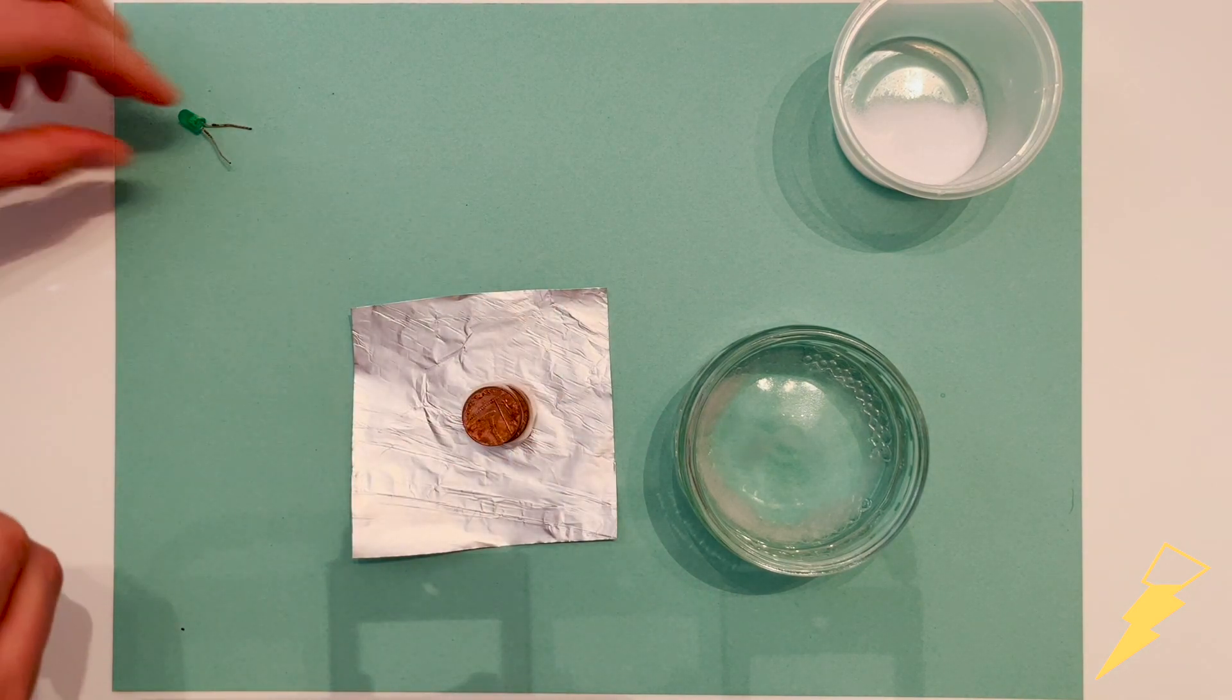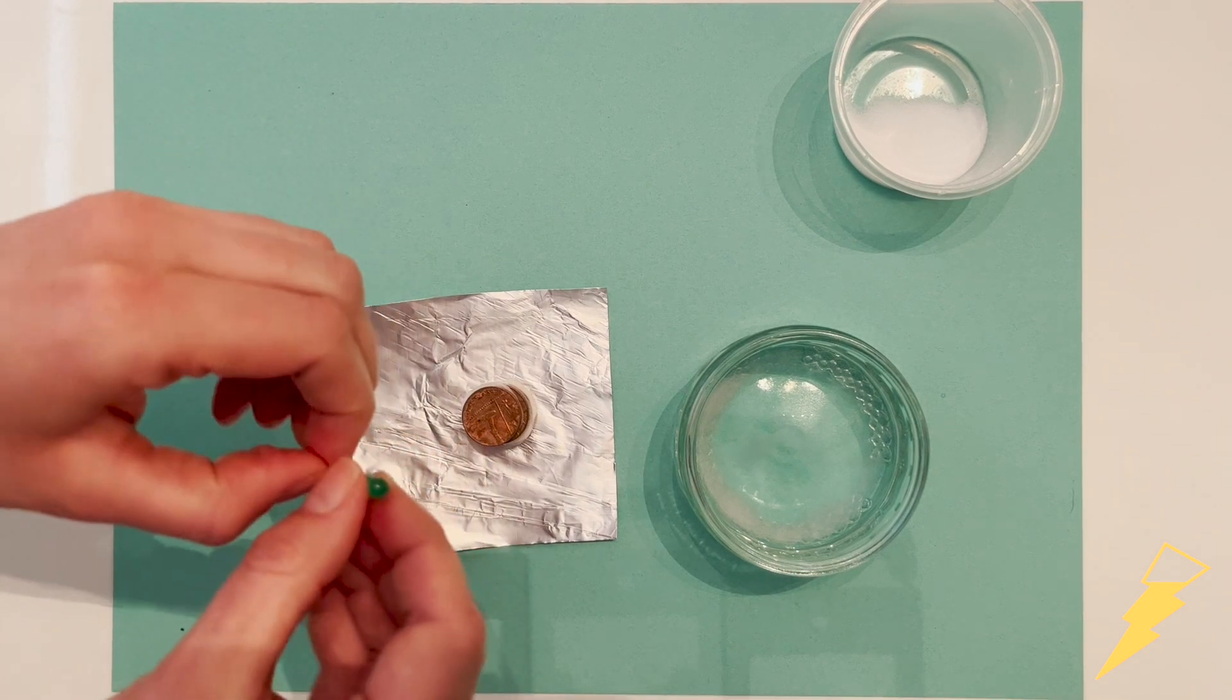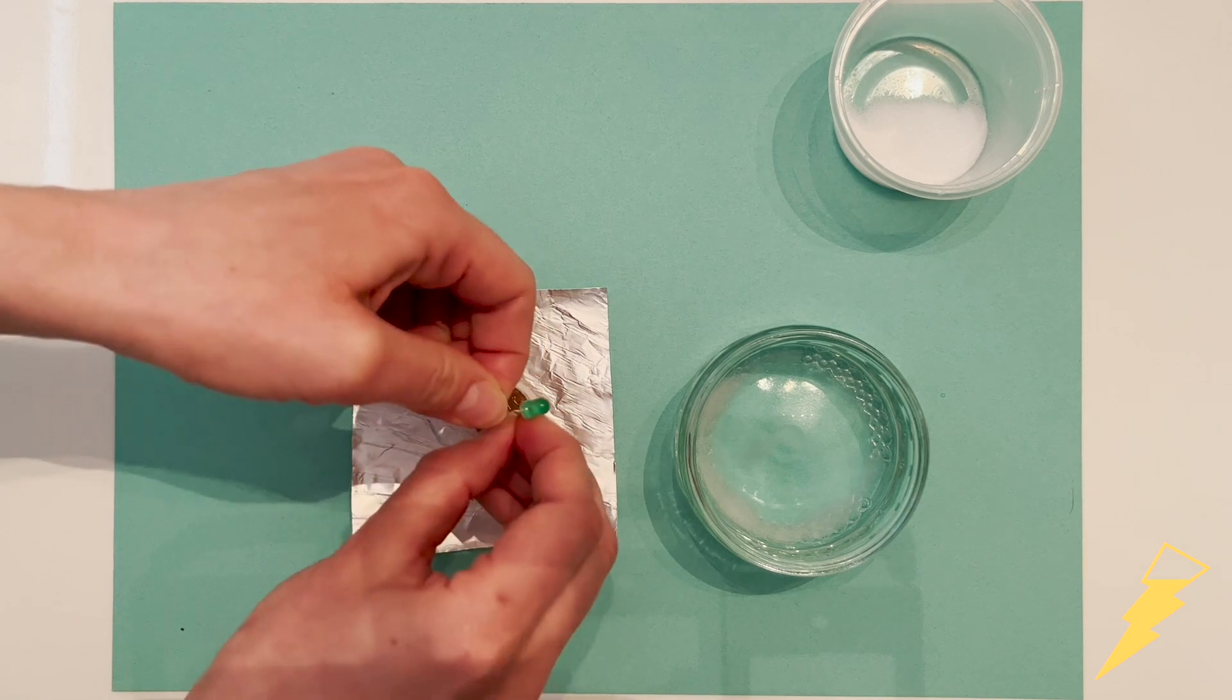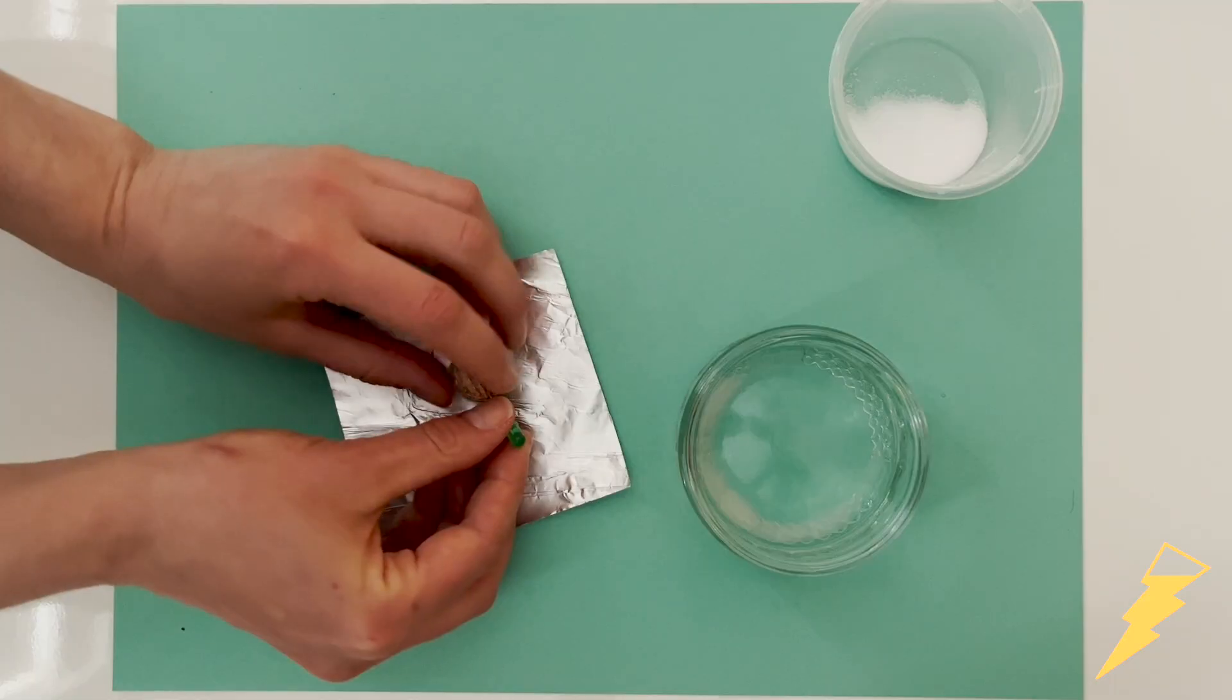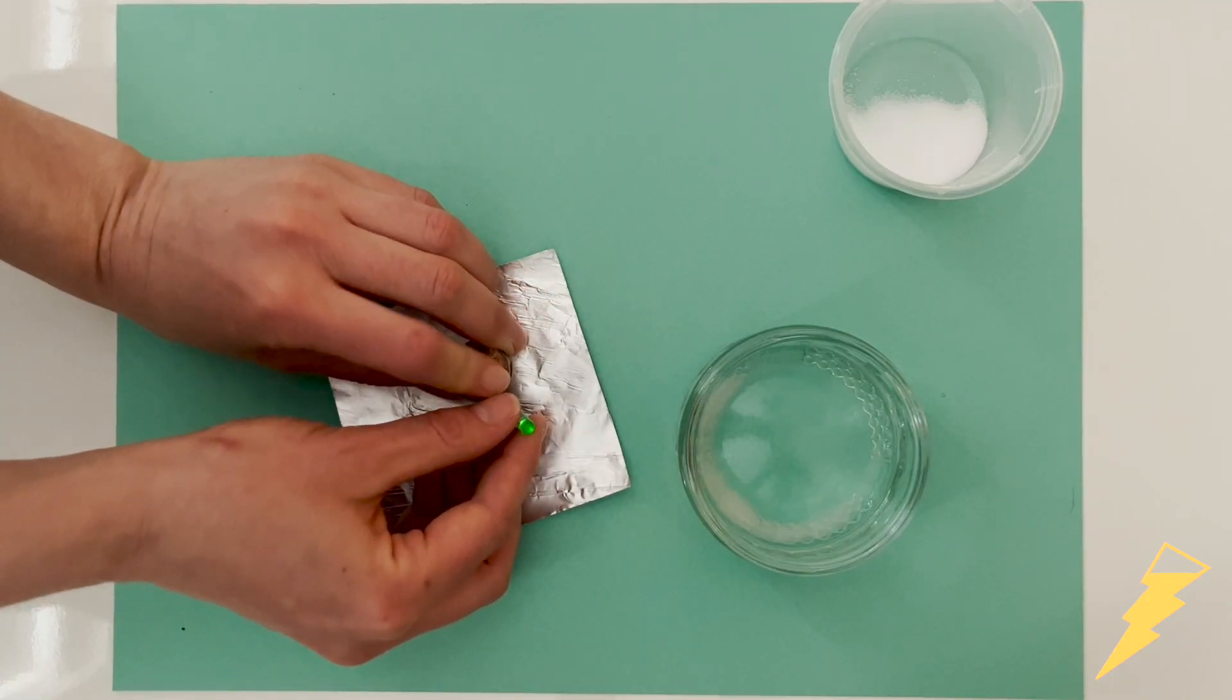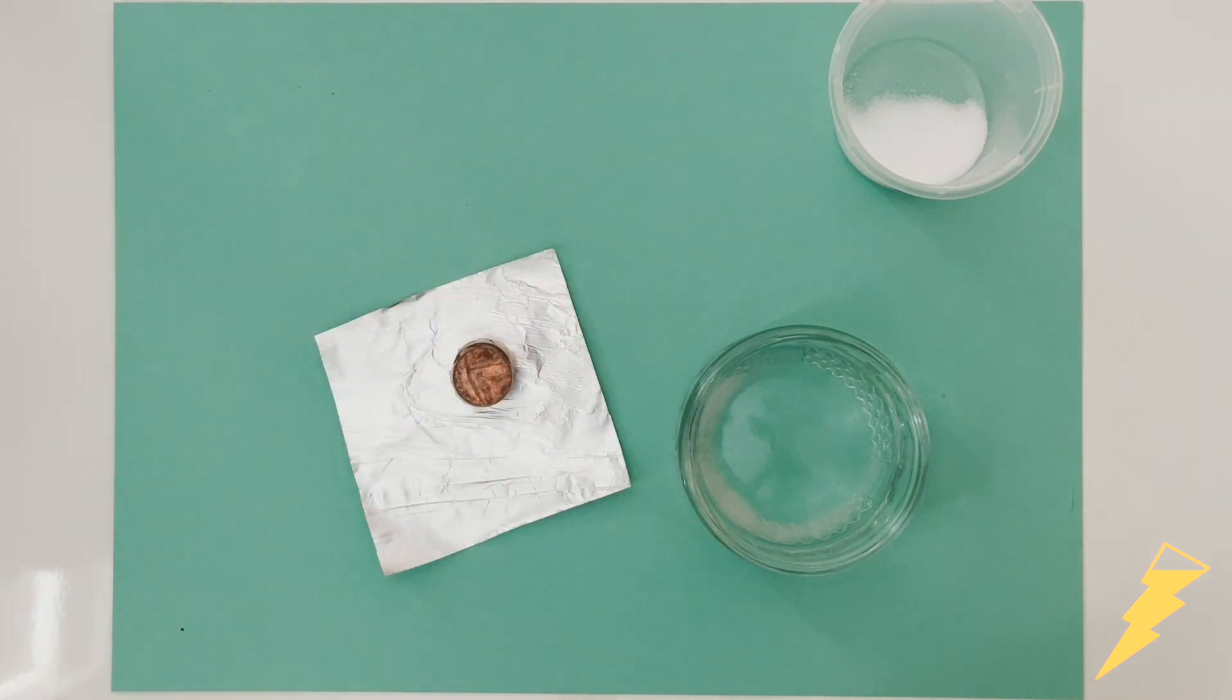We're going to place one leg of the LED on the foil and the other on the top of the battery. LEDs can be quite fiddly as they only allow current to flow in one direction, so if you try it one way round and it doesn't light up, turn it round and try it in the other direction.